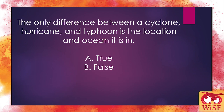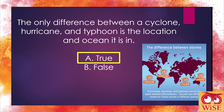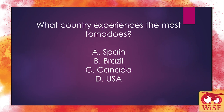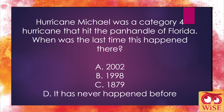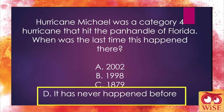Fifth: the only difference between a cyclone, hurricane, and typhoon is the location and ocean it's in. This is true — hurricanes are in the Atlantic and Eastern Pacific, cyclones are south of India, and typhoons are northeast of Australia. Sixth: what country experiences the most tornadoes? The answer is the USA — we have by far a significantly larger number of tornadoes than any other country due to our unique geographical and meteorological conditions. Seventh: Hurricane Michael was a Category 4 hurricane that hit the panhandle of Florida — when was the last time this happened there? The answer is never — we had never had a Category 4 hurricane make landfall in the panhandle of Florida until Hurricane Michael.